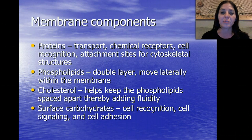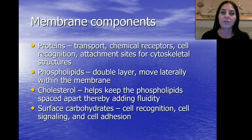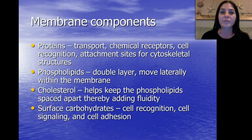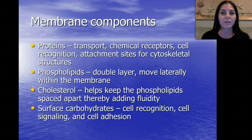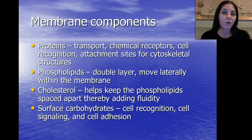We also have phospholipids — the double layer that moves laterally within the membrane. Cholesterol helps keep the phospholipids spaced apart, thereby adding fluidity. We also have surface carbohydrates, which are used for cell recognition — how one cell recognizes another — cell signaling, which is very important in the immune system as well as with hormones, and cell adhesion, meaning how the cell sticks to other cells or objects.